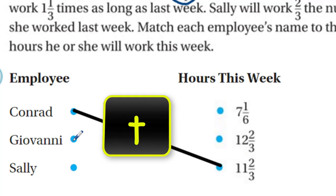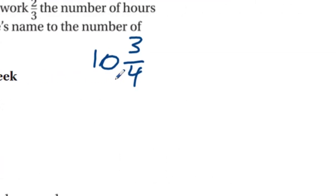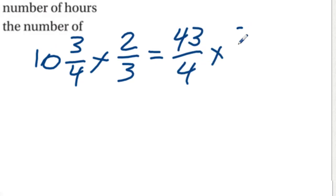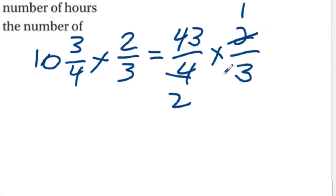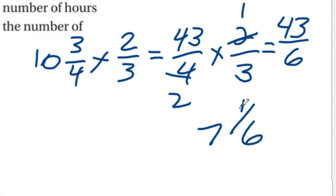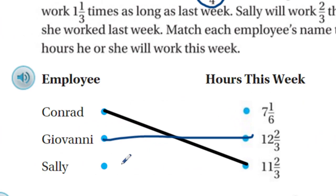Now Sally: ten and three-fourths times two-thirds. Converting ten and three-fourths to forty-three fourths, then multiplying by two-thirds gives us 86/12. I don't see a common factor between 43 and 3, so we get 86/12. Simplifying: 7 times 12 is 84, leaving 2, so Sally worked seven and two-sixths — that's seven and one-sixth hours this week.